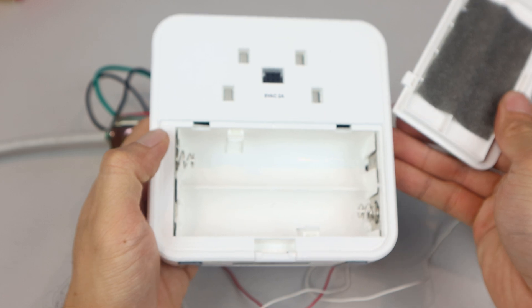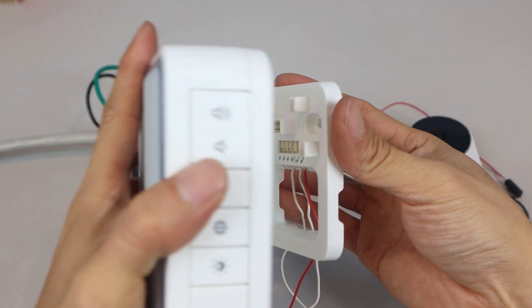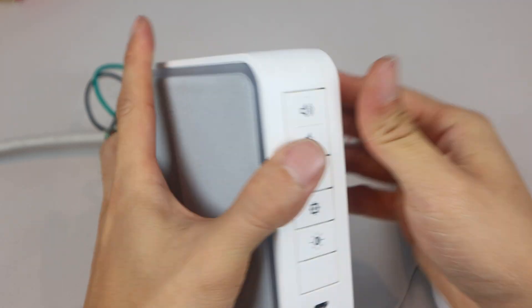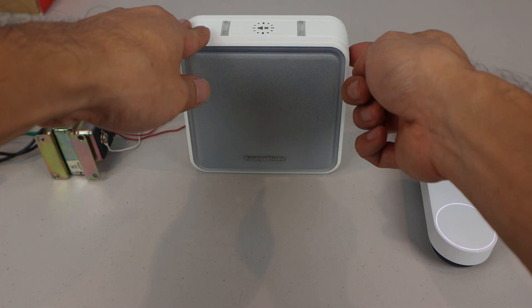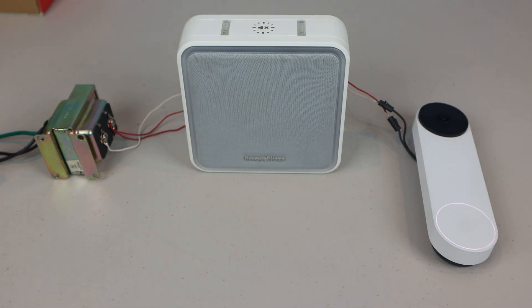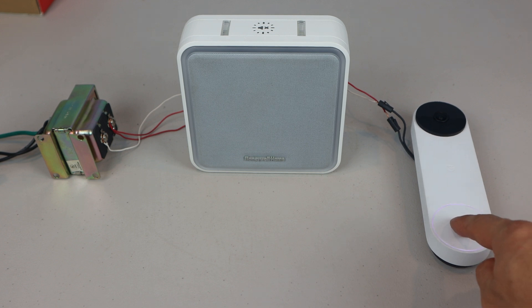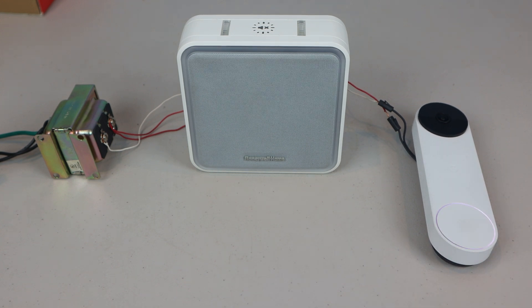Just confirming that there are no batteries in the chime since it'll be fully powered off the transformer. Now, both the chime and video doorbell should be powered by the transformer. So when I press the doorbell button, the chime will activate and play the selected tone twice.